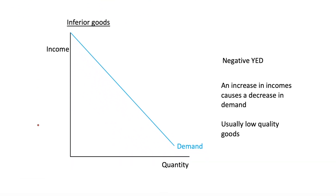The second type of good we'll look at is inferior goods. Unlike normal goods, these have a negative YED. What does this mean? It means that an increase in incomes is going to cause a decrease in demand for this good.